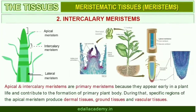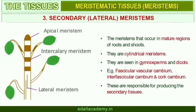Both apical meristems and intercalary meristems are primary meristems because they appear early in the life of a plant and contribute to the formation of the primary plant body. The meristem that occurs in mature regions of roots and shoots, particularly those that produce woody axis, and appears later than primary meristem is called the secondary or lateral meristem. They are cylindrical meristems. Fascicular vascular cambium, interfascicular cambium, and cork cambium are examples of lateral meristems.